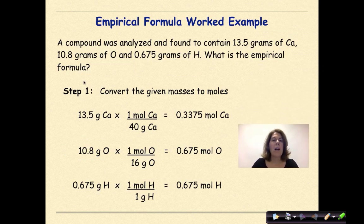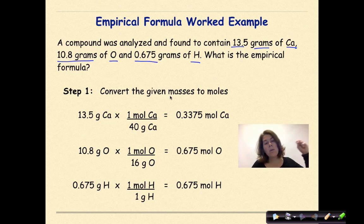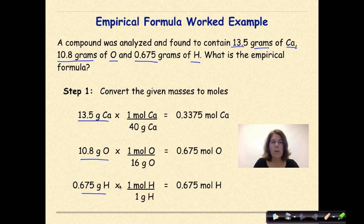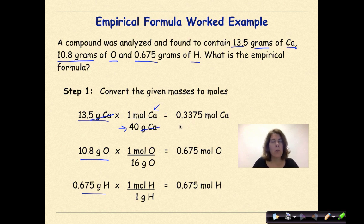Empirical formula worked example. A compound was analyzed and found to contain 13.5 grams of calcium, 10.8 grams of oxygen, and 0.675 grams of hydrogen. What's the empirical formula? Step one: convert to moles. We have our masses of calcium, oxygen, and hydrogen. Using the atomic mass of calcium, we convert to get 0.3375 moles of calcium. For oxygen, 10.8 grams divided by 16 grams per mole gives 0.675 moles of oxygen. Do not shortcut steps on this — make sure your units cancel.